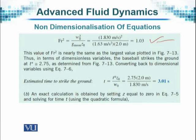This value of Froude number squared is nearly the same as the largest value plotted. Thus, in terms of dimensionless variables, the baseball strikes the ground at t* equal to 2.75 from the graph — it takes about 2.75. We cannot attach seconds to it because t* is supposed to be dimensionless.